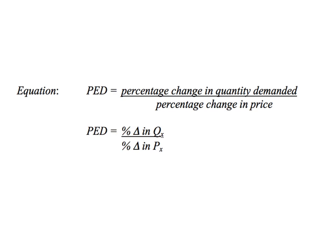What we focus on today is the equation. Price elasticity of demand — abbreviated PED — is the percentage change in the quantity demanded over the percentage change in the price, and of course this is for the same product. So it's percentage change in the quantity of X over a percentage change in the price of X.